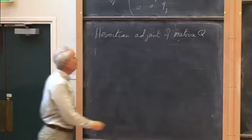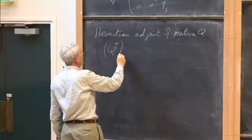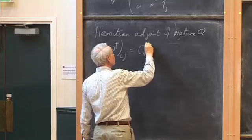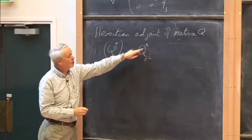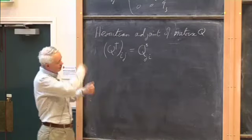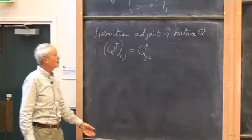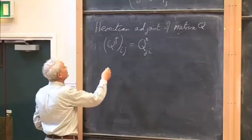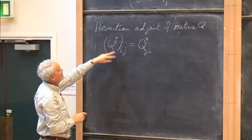Q-dagger is defined so that the (i,j)-th element of Q-dagger equals the complex conjugate of the (j,i)-th element of Q. The Hermitian conjugate means you swap rows and columns and take the complex conjugate. This property does not depend on what basis we look at it in. So let's see what this becomes in the eigenvector basis.